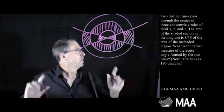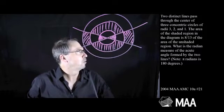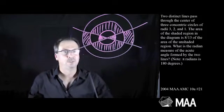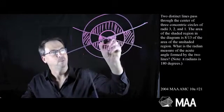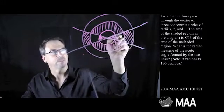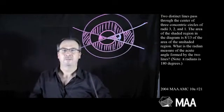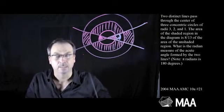Great. What's the question? What is the radian measure of the acute angle formed by the two lines? So here's the angle, the smallest angle formed by the two lines. I'll call it W or something. I want the measure of that angle, W, in radians.